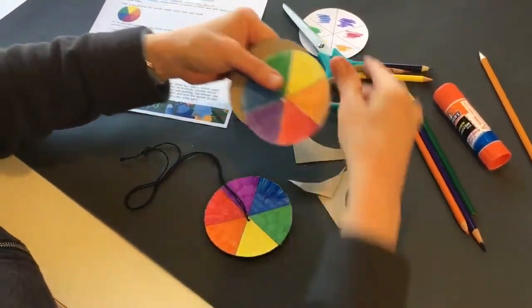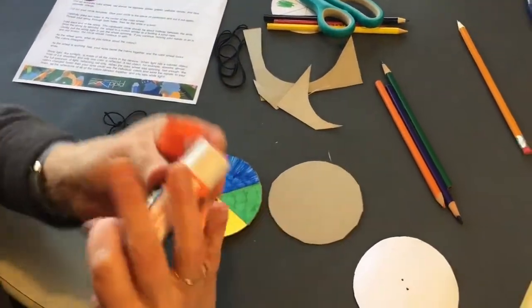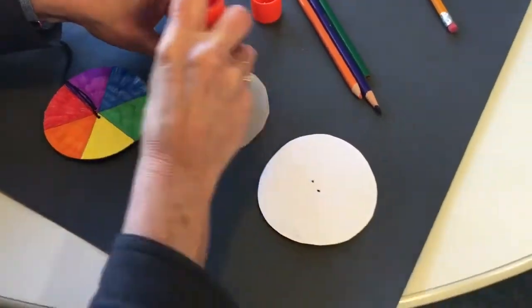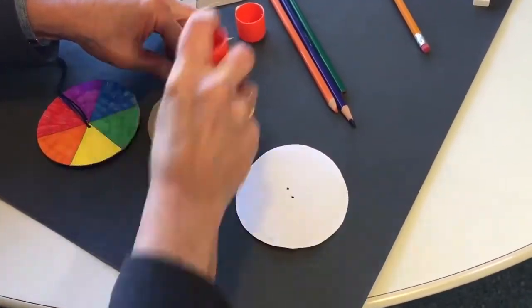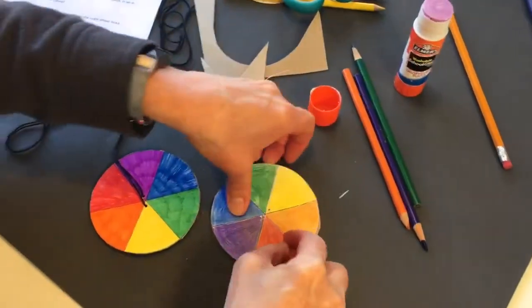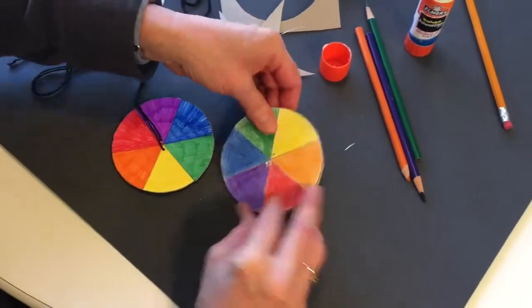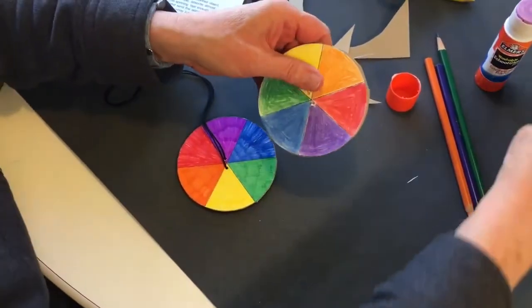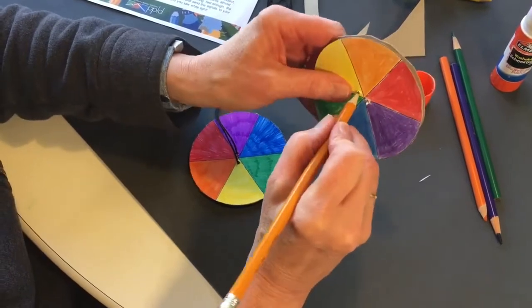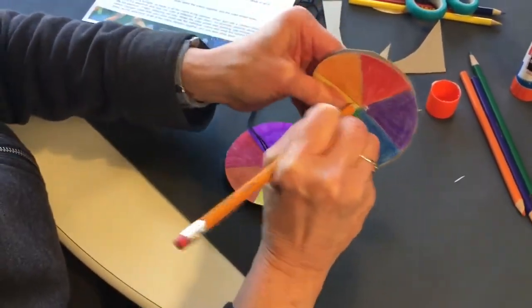I'm going to glue my color wheel template to my cardboard and then now you can see I have two little holes already here but you will poke two holes just like I did here through the cardboard, side by side you see how I did that.